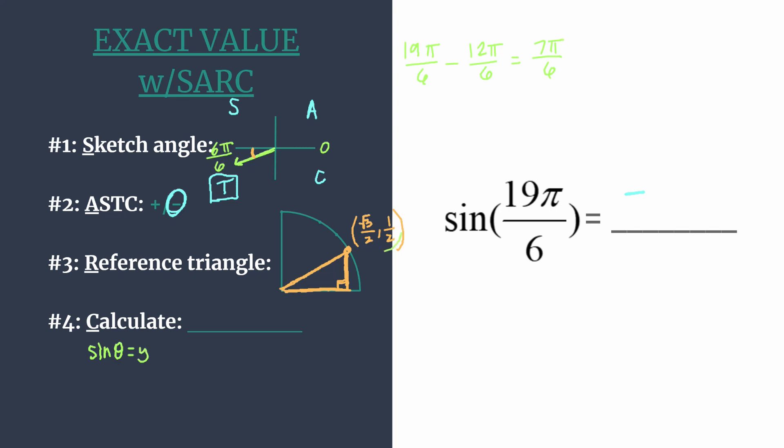So we can look at the y-coordinate from our first quadrant triangle. We know from step 2 our answer is going to be negative, and we don't really have to calculate anything here. We know that the sine of 19π over 6 is going to be negative 1 half.